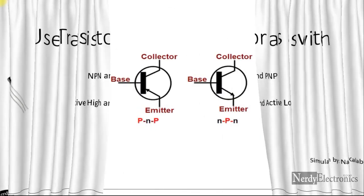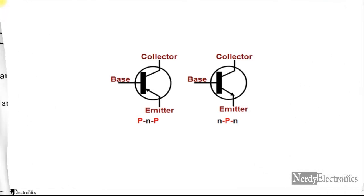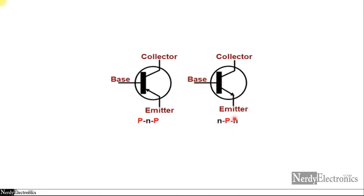Let us first look at the symbols for NPN and PNP transistors. On the left side we have the PNP transistor. You can differentiate based on the direction of the arrow. For PNP transistor, the direction of the arrow is inwards from the emitter towards the base, whereas in NPN it is outwards from the base towards the emitter.